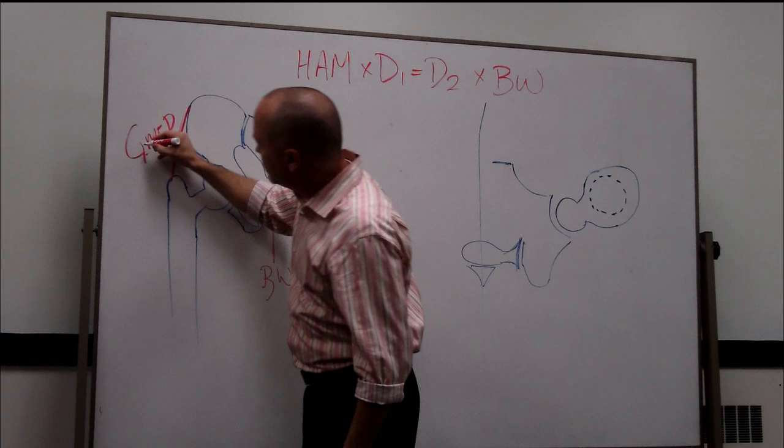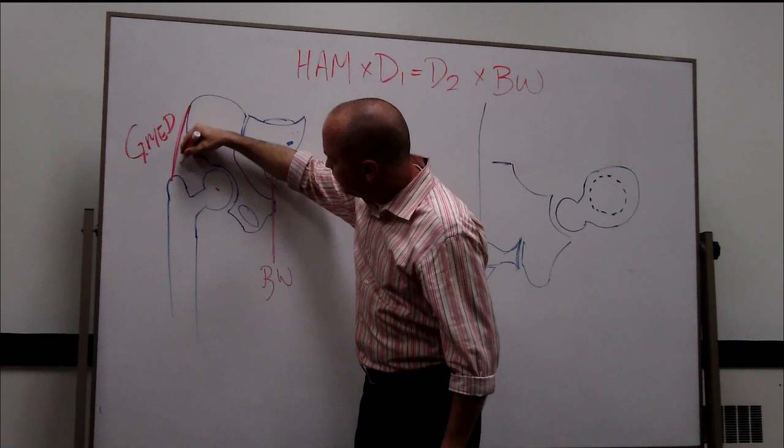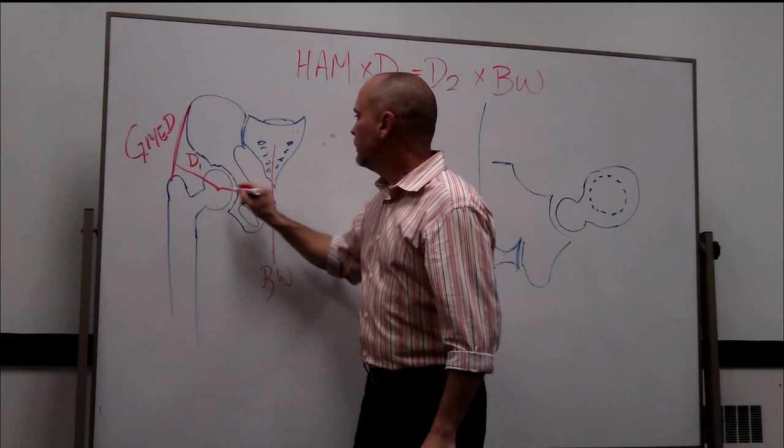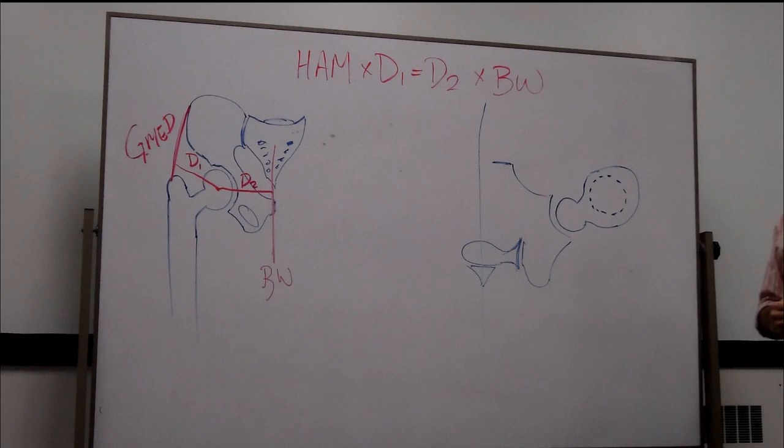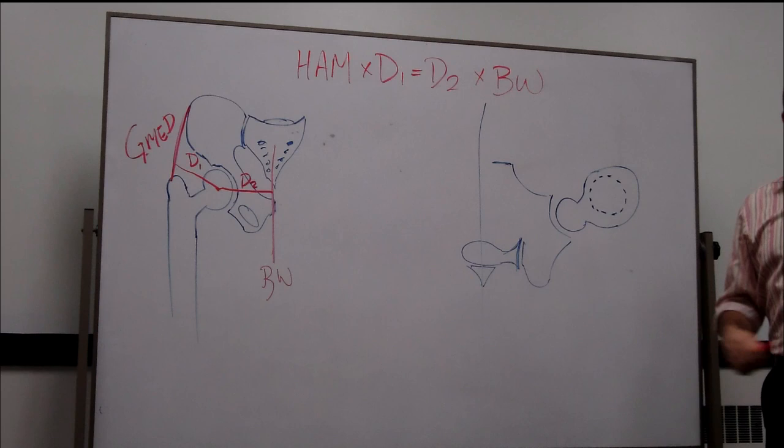Would it make sense then that D1 is from here and D2 is from here? So glute medius, the amount of force that the glute medius can give you times D1 should equal D2 times body weight. Equilibrium formula, right? Are you with me?